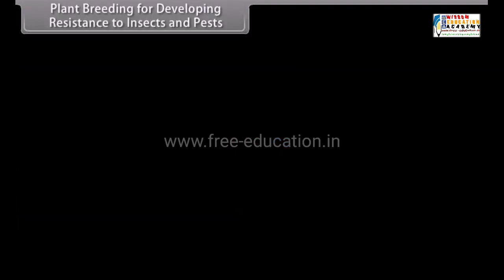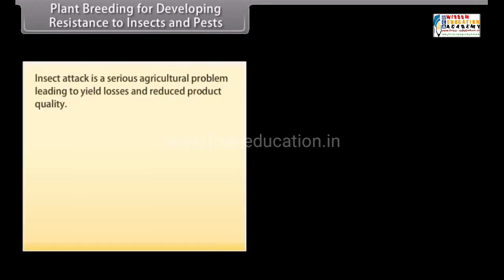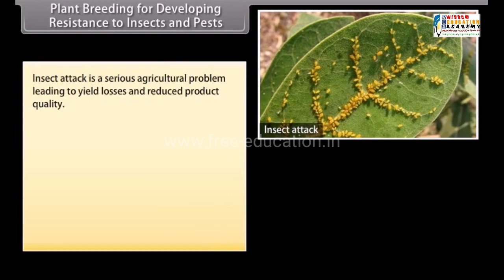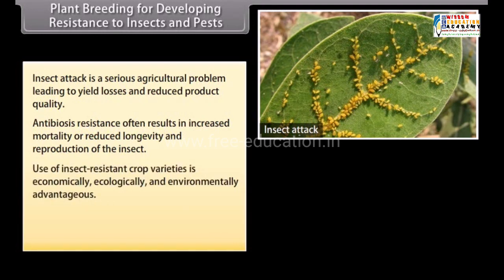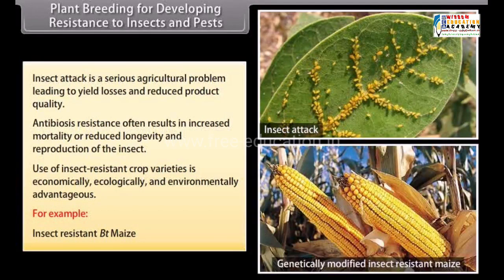Plant breeding for developing resistance to insects and pests: Insect attack is a serious agricultural problem leading to yield losses and reduced product quality. Antibiosis resistance often results in increased mortality or reduced longevity and reproduction of the insect. Use of insect-resistant crop varieties is economically, ecologically, and environmentally advantageous. For example, insect-resistant Bt maize.